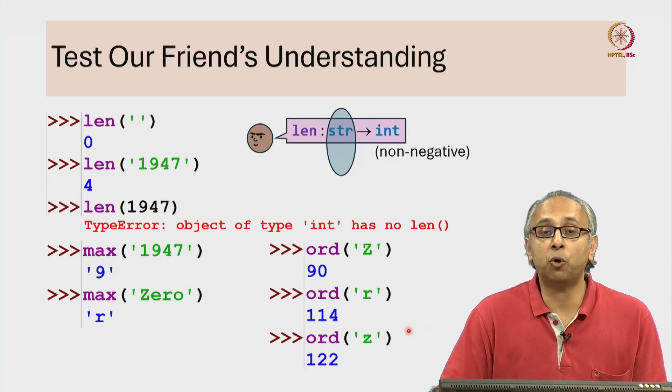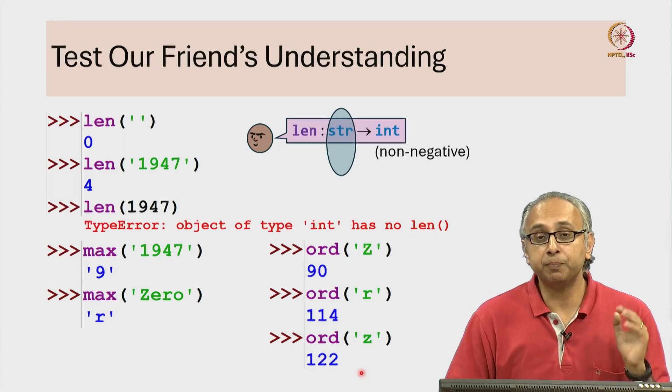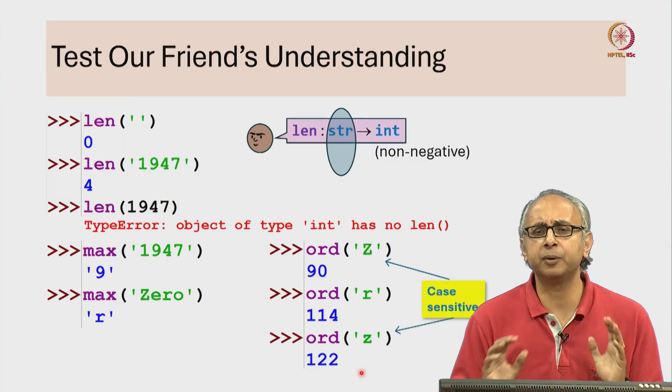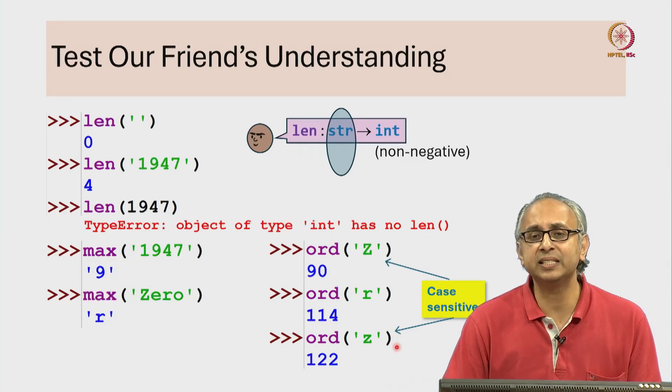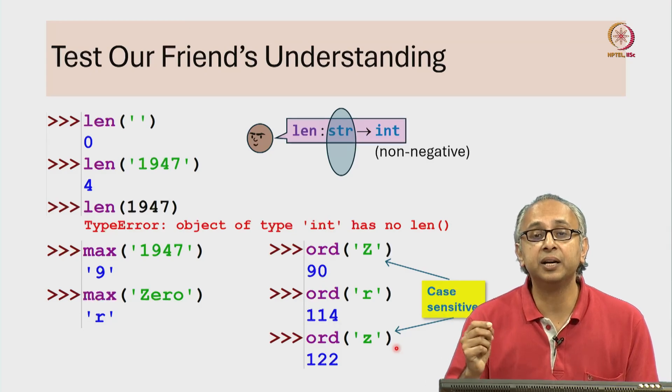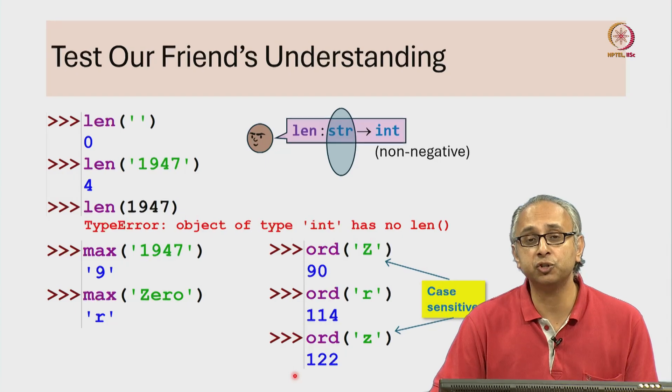It turns out the ordinal value of little z is even bigger. So, it's important at this point to recognize that in Python, like in many other programming languages, letters are case sensitive. There is a difference between an upper case z and a lower case z. They are represented using different integers.